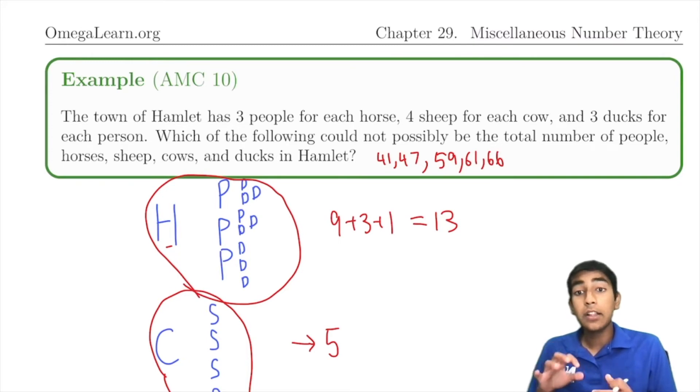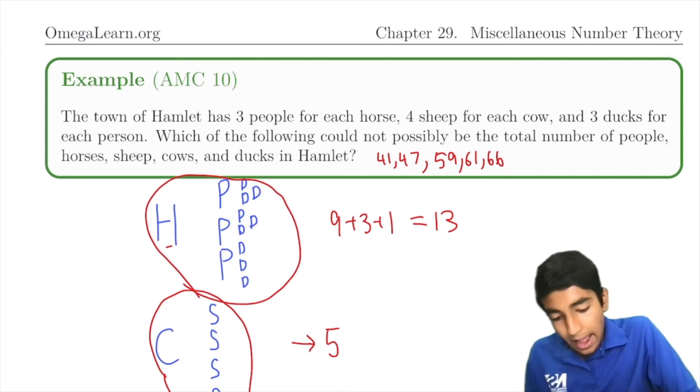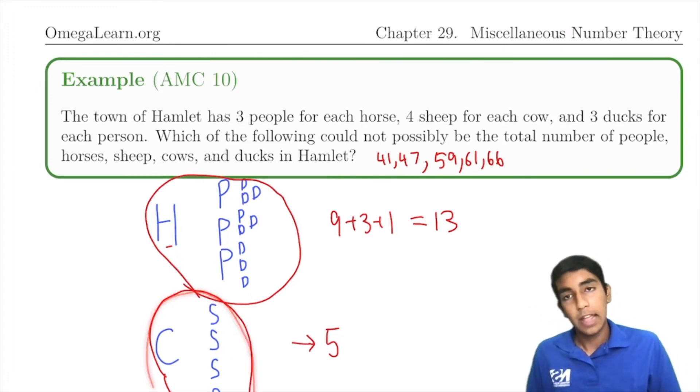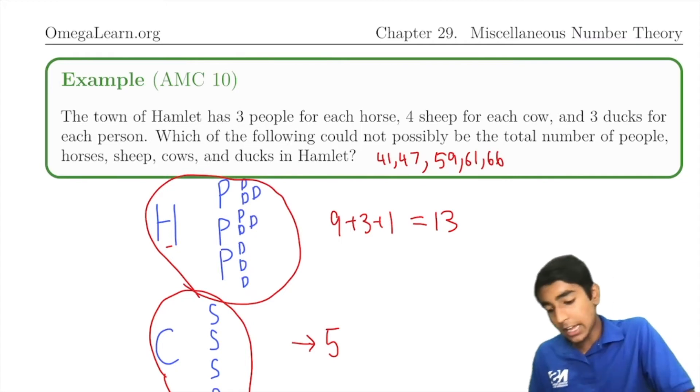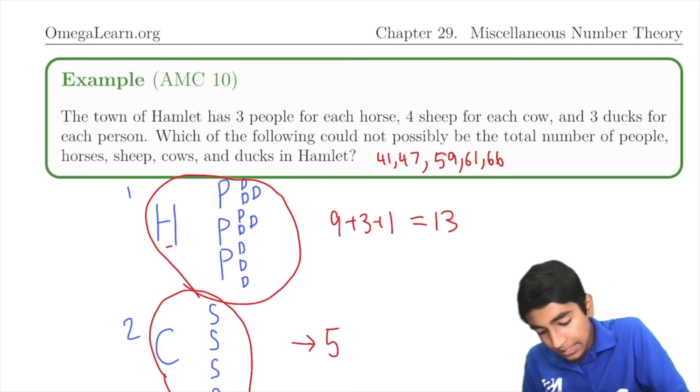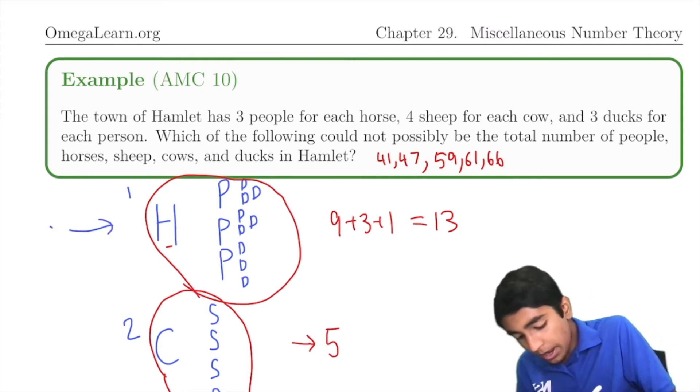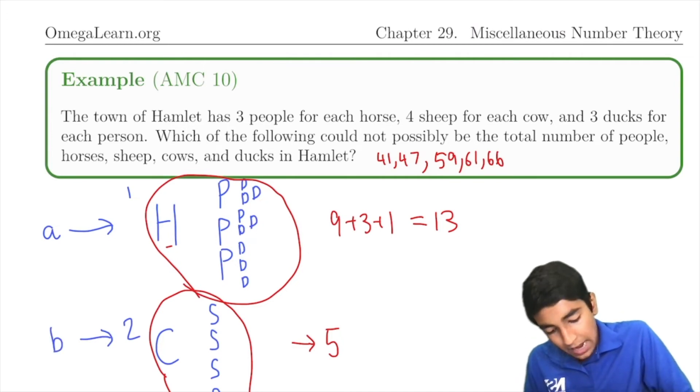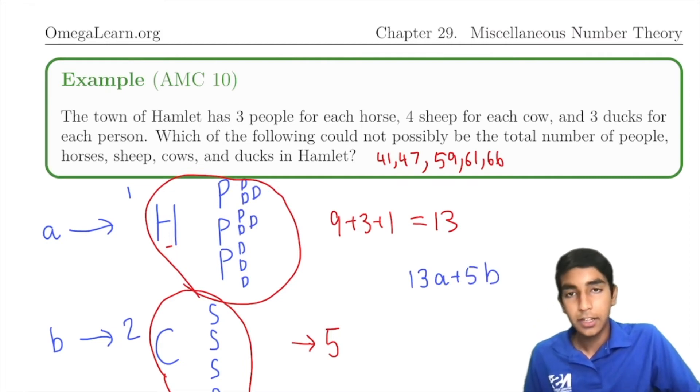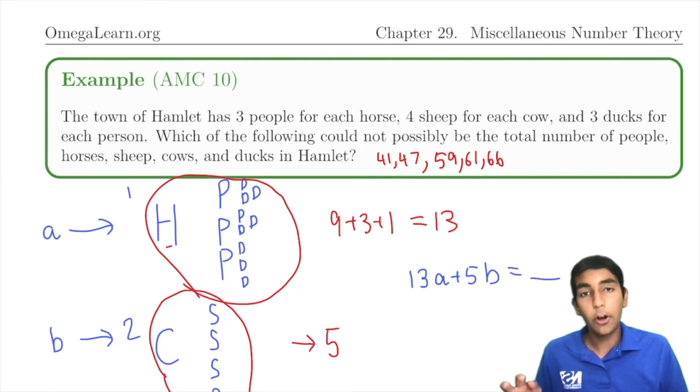Basically, to have a cow, we also have to have 4 sheep. They're like a package deal. You can't just take half of this group and be like, oh, we have 1 cow and 2 sheep. Not allowed. You either take the whole group or nothing. And you can take as many groups as we'd like. There's kind of two kinds of groups: group 1 and group 2. So we essentially have, let's say we have a of group 1 and b of group 2. Then we have the total number of organisms: 13a + 5b.